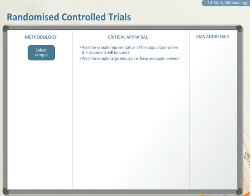Was the sample large enough — that is, did it have adequate power? The representativeness of the sample is related to the external validity of the study, meaning can this study be generalized to your clinical practice? At this stage, certain researchers use a pragmatic RCT, which has broad inclusion criteria and narrow exclusion criteria, giving it greater generalizability to clinical practice — greater external validity — often at the expense of internal validity.